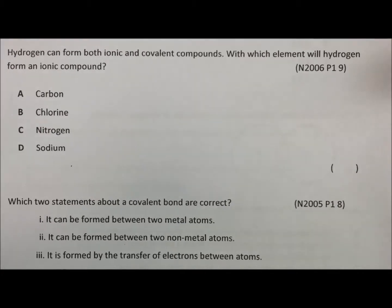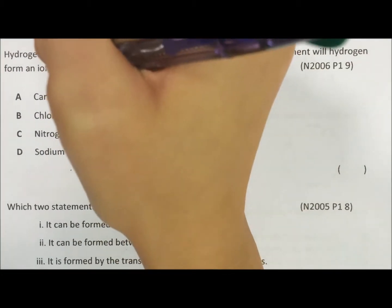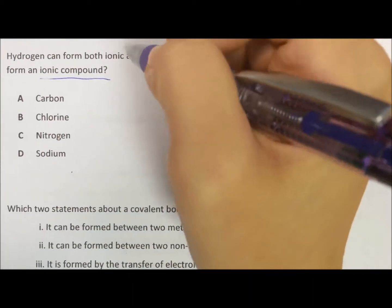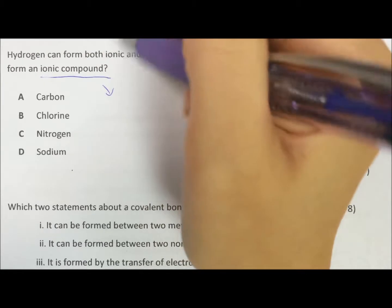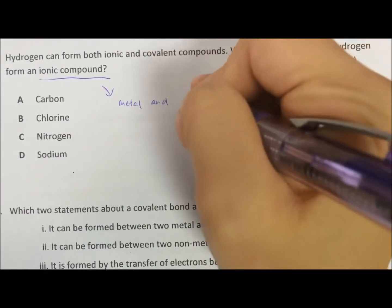Okay, worksheet 4, question 2. Hydrogen can form both ionic and covalent compounds. With which element will hydrogen form an ionic compound? So ionic compound is metal and non-metal.